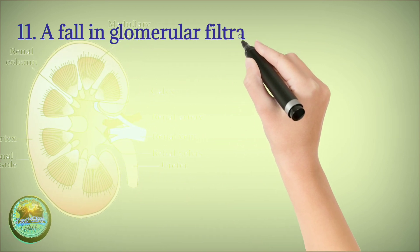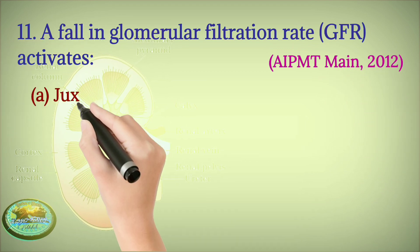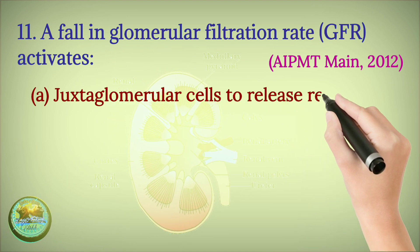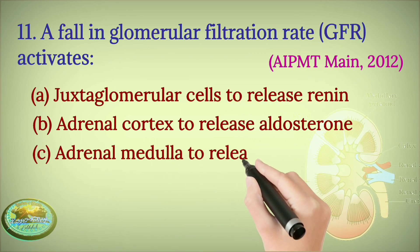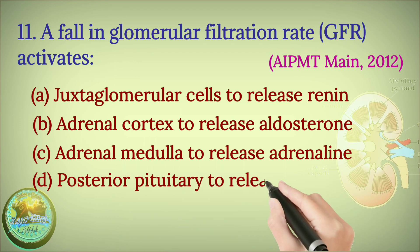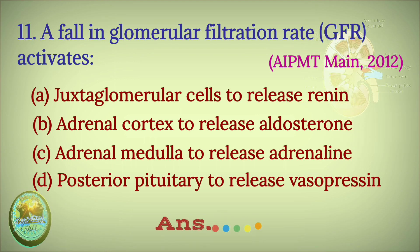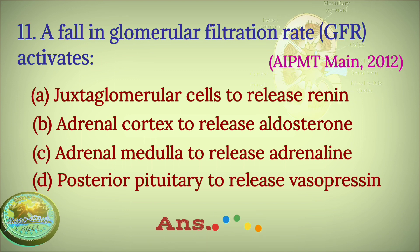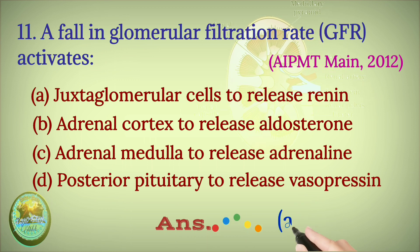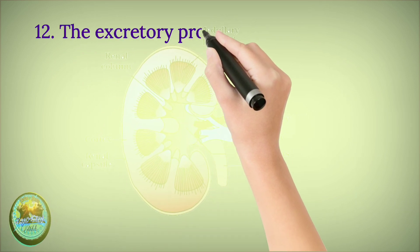Question 11: A fall in glomerular filtration rate activates — juxtaglomerular cells to release renin; adrenal cortex to release aldosterone; adrenal medulla to release adrenaline; or posterior pituitary to release vasopressin?